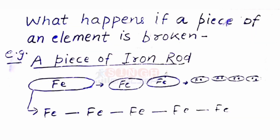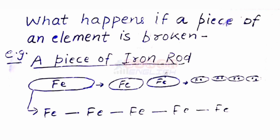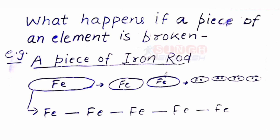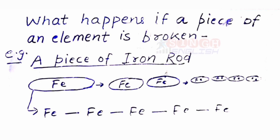What happens if a piece of an element is broken? Take an example — a piece of iron rod. When a piece of iron rod is broken, it forms smaller pieces of iron. If we continue breaking this piece of iron, it forms still smaller and smaller pieces. This shows that even being smaller pieces of iron doesn't change its property.